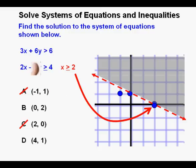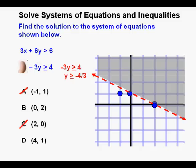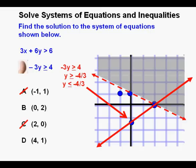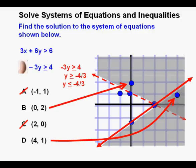For the second inequality we have x equals 2 for the boundary point. For the y-intercept we have negative 3y is greater than or equal to 4. Dividing both sides by negative 3, and remembering to flip the inequality sign when dividing by a negative number, we get y is less than or equal to negative 4 thirds. We draw in our second boundary line, and since it's less than or equal to we shade below the line. With the two remaining points plotted at (0, 2) and (4, 1), point (0, 2) is only within one inequality so we cross it off, but (4, 1) is in the area shaded by both inequalities, so we circle it as our correct answer.